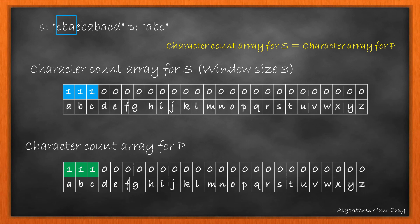As we can see, they are indeed equal. We will add the index of the start of the window in our result list. After this, we will remove the count of start character by decrementing its value in the array and move forward.